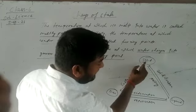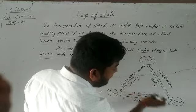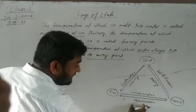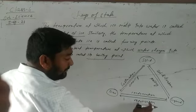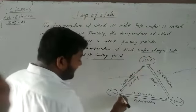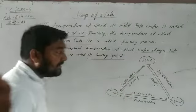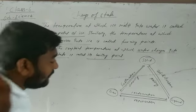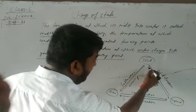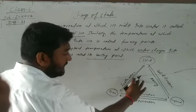From solid to liquid — that is the melting phase. Then liquid turns into gas through vaporization. From gas, when we cool it, it becomes liquid, and then solid. This covers melting, vaporization, and cooling.